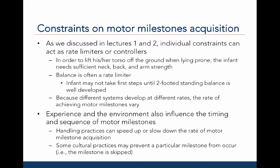In addition to structural individual constraints, functional individual constraints like experience, or environmental constraints like cultural practices, can also influence the timing and sequence of motor milestones. For example, handling practices can speed up or slow down motor milestones. If a mother holds her baby for too long during development, the baby does not have the ability to develop the skill to hold his or her torso and head up independently.